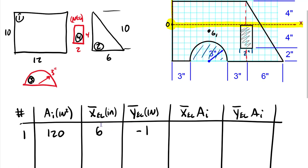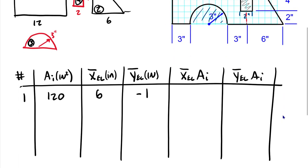For shape two, the right triangle: area = ½ × base × height = ½ × 6 × 10 = 30 in². Show some work in the table — don't just write the final number — so there's a clear track of where the values came from.